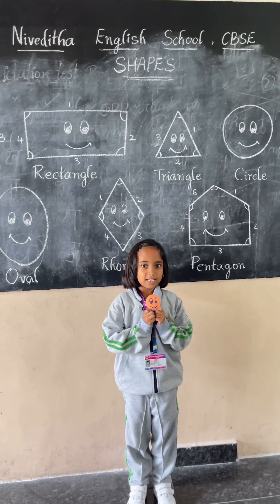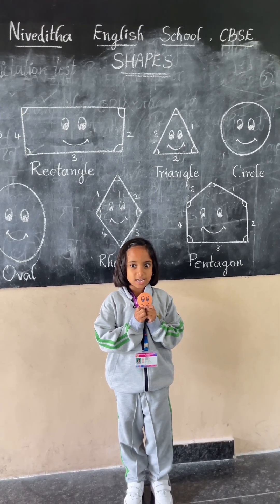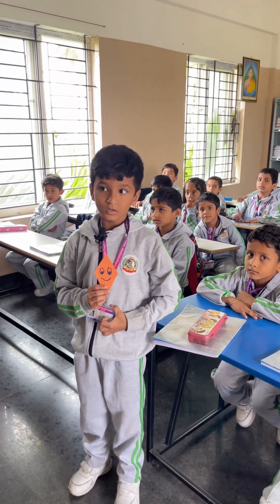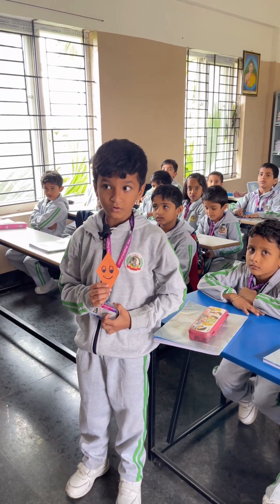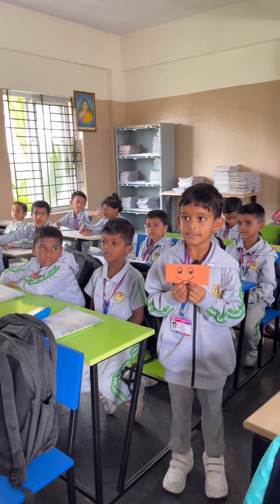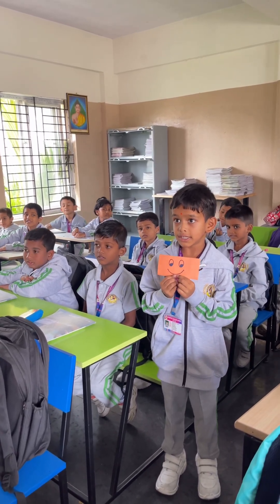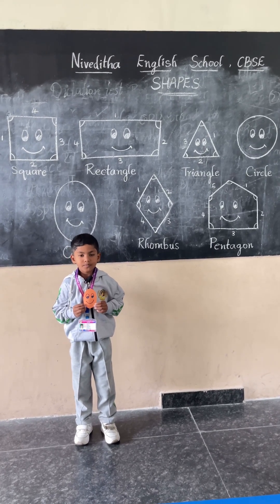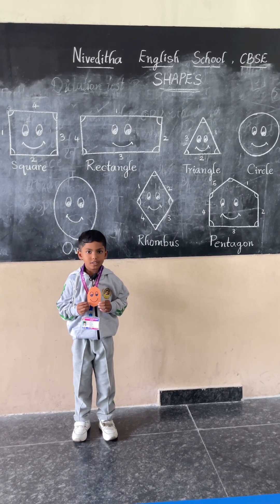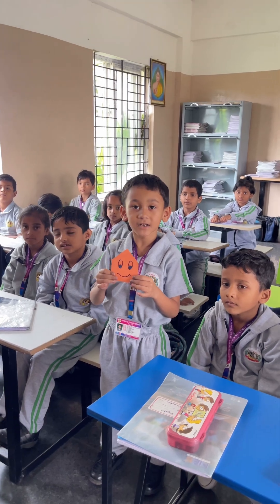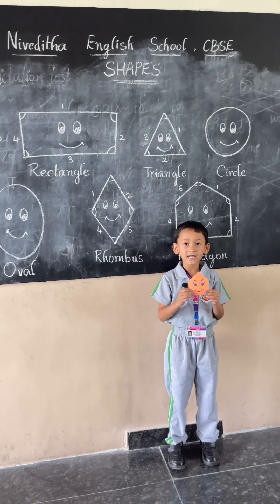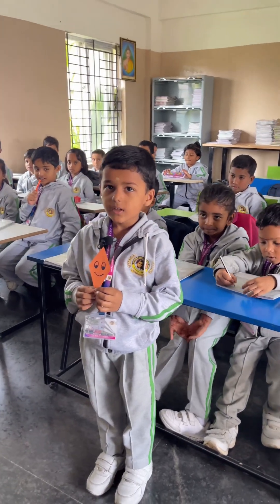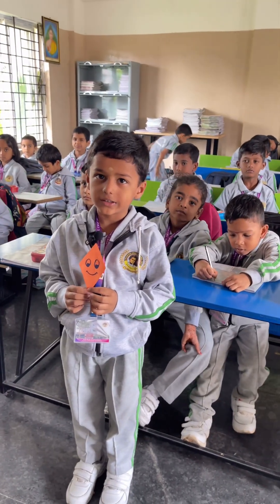This is a circle. It has zero sides and zero corners. Very good. This is a circle — zero sides and zero corners. This is a rhombus. It has four sides and four corners.